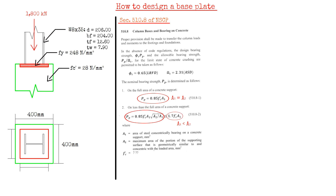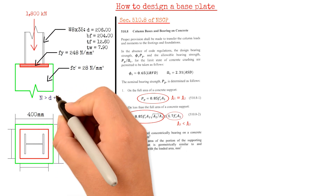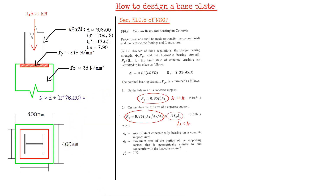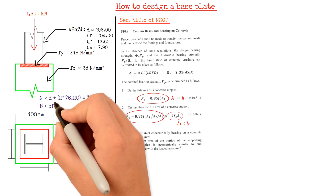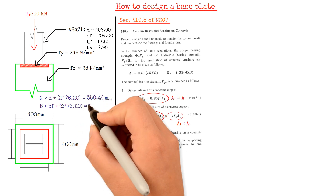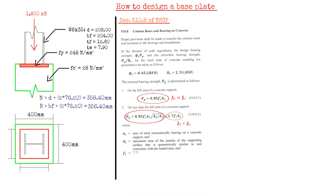Going back to the sample, the first step is to assume dimensions for our base plate. As required by the Occupational Safety and Health Administration, the base plate dimensions should be large enough for the installation of 4 anchor rods. Length N should be greater than the depth of the steel column plus 2 times 76.2 mm, giving us 358.4 mm. In this case, we will choose 360 mm by 360 mm as our trial base plate size.